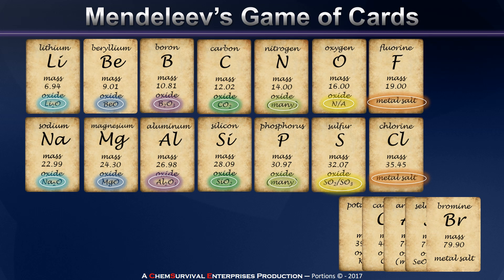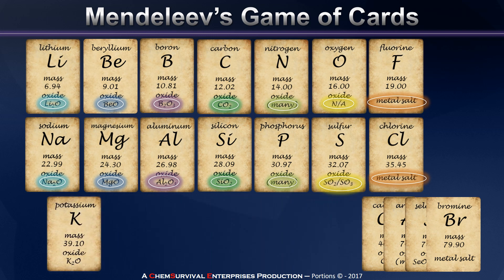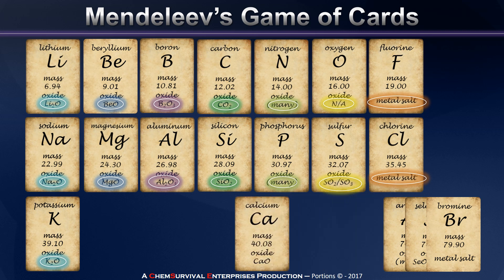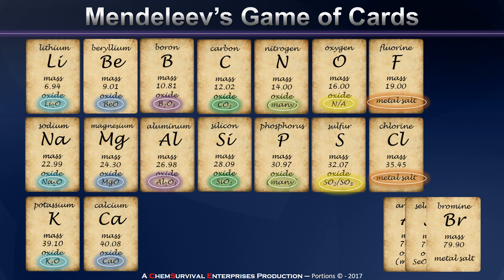So let's continue our game. Let's add potassium, which we would put at the start of a new row because it behaves similarly to sodium and lithium. The same is true of calcium.